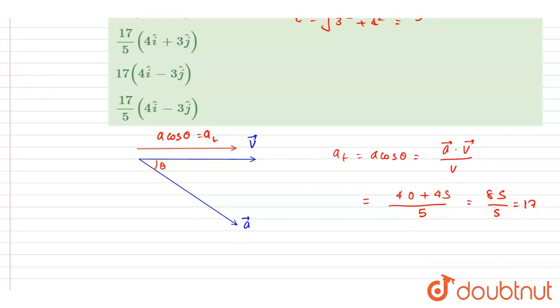So 17 is the magnitude, right? The direction will be same as that of the velocity vector. So if I write down the tangential vector, it will be...